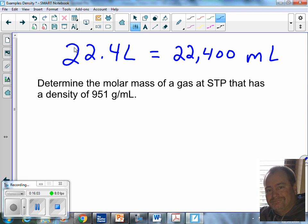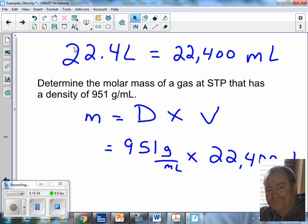Now, just like my last problem, I know that mass is equal to density times volume. My density here is 951 grams per milliliter. So, I know that I need my volume in milliliters, correct? So, I multiply that by 22,400 milliliters. My milliliters cancel. So, my final answer is going to be in grams. Take the 951 grams times it by 22,400. And I get a huge number, correct?